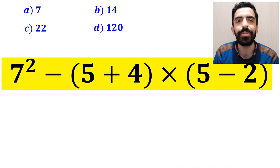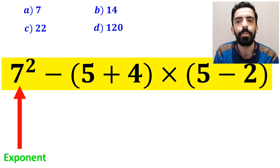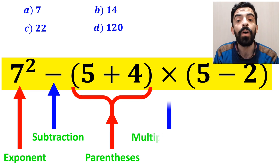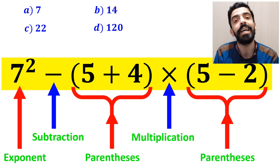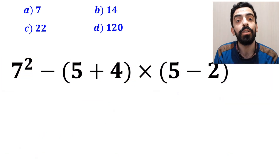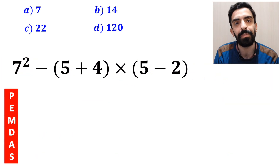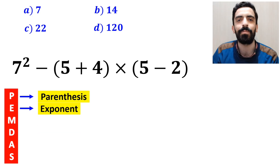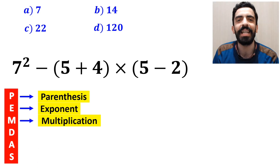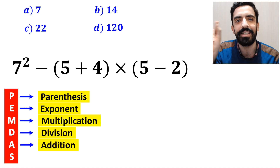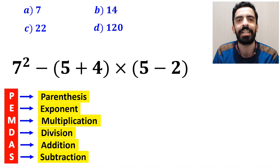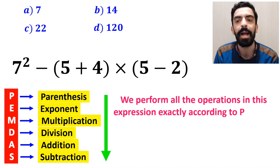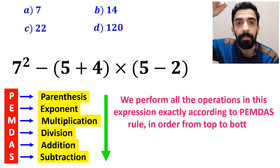As you can see on the screen, in this expression, first we have an exponent, then a subtraction sign, after that we have parentheses, followed by a multiplication sign, and finally another parenthesis. To solve this question, we must strictly follow the PEMDAS rule — where P stands for parentheses, E for exponent, M for multiplication, D for division, A for addition, and S for subtraction. We must perform all operations exactly according to the PEMDAS rule, in order from top to bottom.